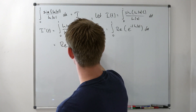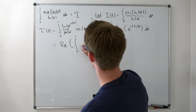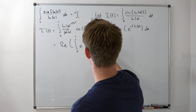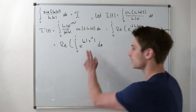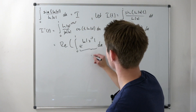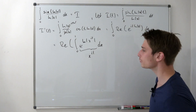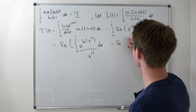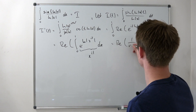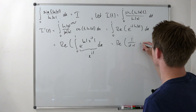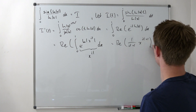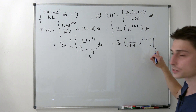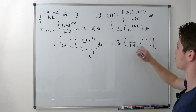This is now the real part of the integral from 0 to 1 of e to the (ln x)^(it) dx, which is just x to the (it). We know how to integrate this: we end up with the real part of 1 over (it + 1) · x^(it + 1) from 0 to 1. The lower bound evaluates to 0 and the upper bound gives 1, so we get the real part of 1 over (it + 1).